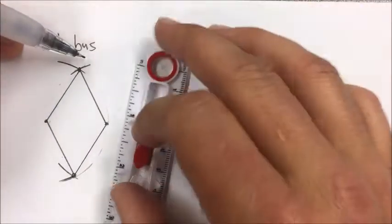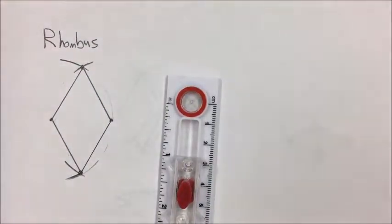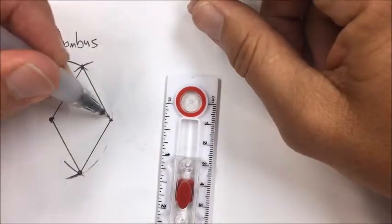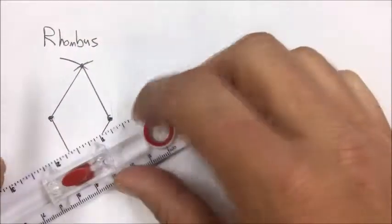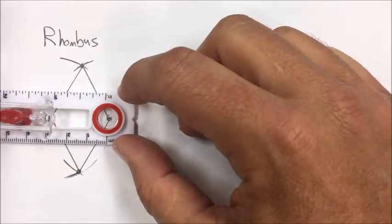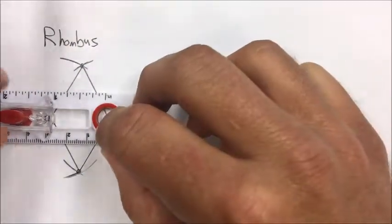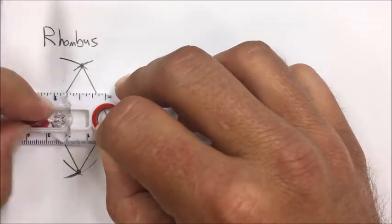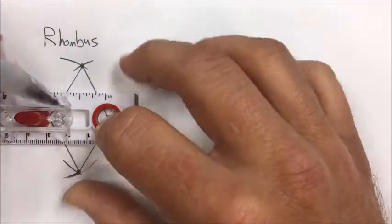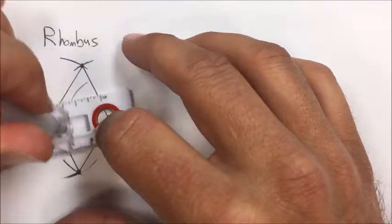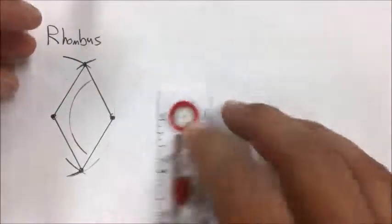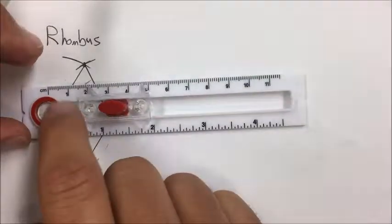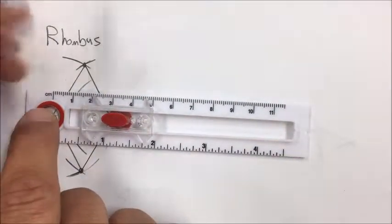All of these lengths should be the same because this radii and this radii are the same — I fixed them on my compass. Now I could make different rhombi from these same two points. I could do any length I want, as long as it's past halfway. I could do this arc and then keep it fixed and do an arc from here as well.